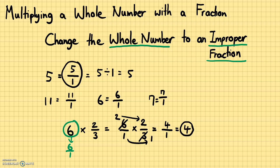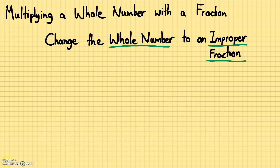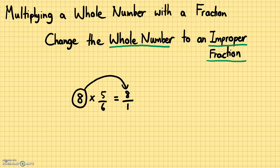Let's try one more example. Let's say I have 8 times 5 sixths. To multiply 8 times 5 sixths, do the same thing: change the whole number to an improper fraction, so 8 over 1 times 5 sixths. Again, you can use cancellation here. 6 and 8 — divide both of them by 2. So 6 becomes 3 and 8 becomes 4.